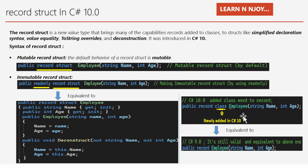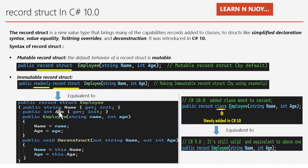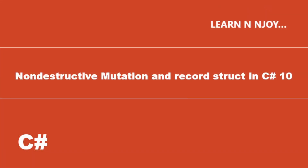In C# 10, when record struct was introduced, C# also added the optional keyword 'class' to the record type. So now we can write public record class Employee(string Name, int Age). The word 'class' is optional and equivalent to the C# 9.0 syntax where we just write public record Employee. It was added simply to give you a clear feel — when you write record class, it is for a class-based record; when you write record struct, it is for a struct.